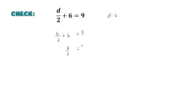And again, since 6 is being added, that means I will subtract 6 on the right-hand side. And putting back my 6 over 2, 9 minus 6 is equal to 3.